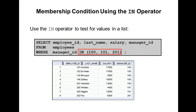I'm going to explain how to use the IN operator in the WHERE clause. The IN operator is used to test for values in a special list of values. For example, this is a single statement: SELECT employee last name, manager id FROM employees WHERE manager id IN (100, 101, 201).